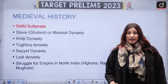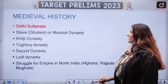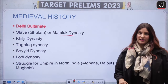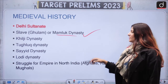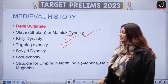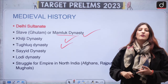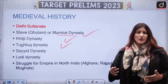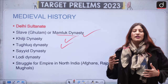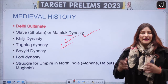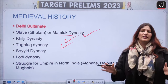Then we have Medieval History. The Delhi Sultanate is very important — the Mamluk dynasty (also called Ghulam or Slave dynasty because the rulers were slaves), Khilji dynasty, Tughlaq dynasty, Sayyid, and Lodi — their important rulers, innovations, systems they introduced, administration during their rule, important writers, and any Sufi saints — everything is important.